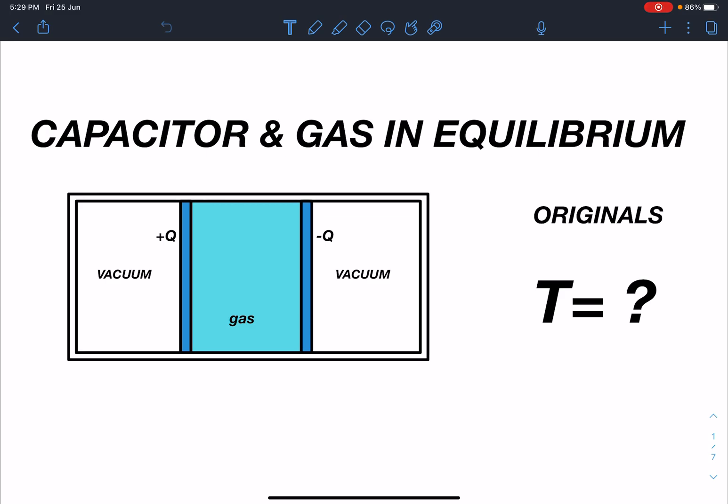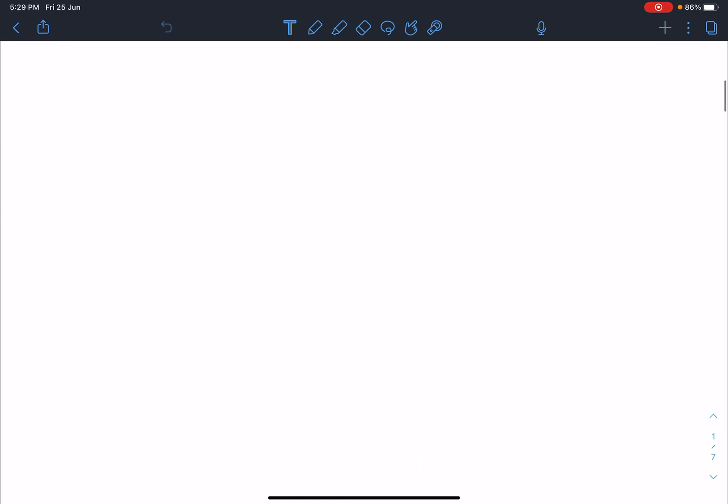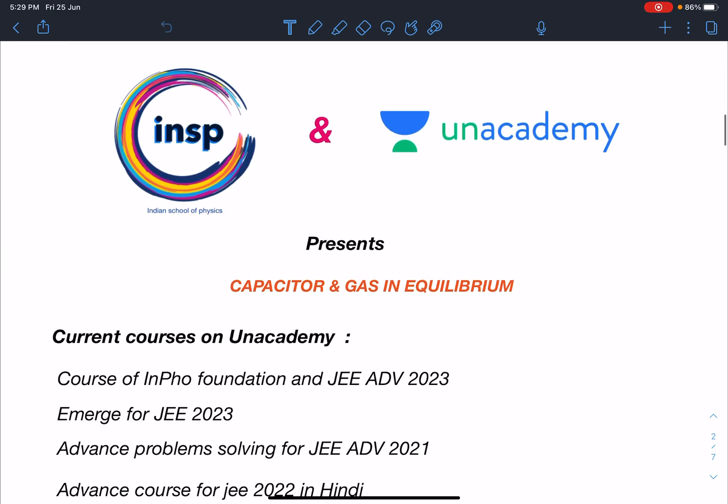It is a mixture of electrostatics and thermodynamics. This video is brought to you by Indian School of Physics and Unacademy together and name of this problem is Capacitor and Gas in Equilibrium.